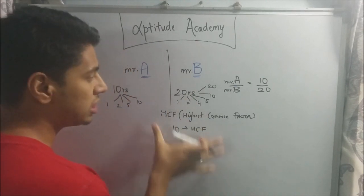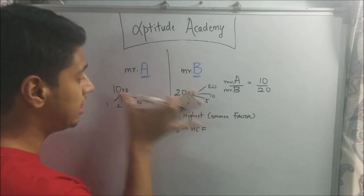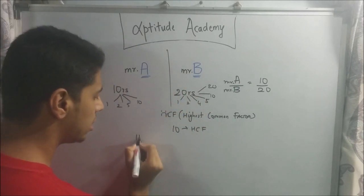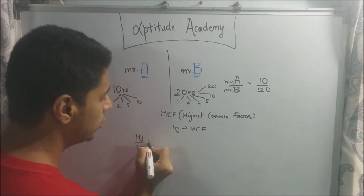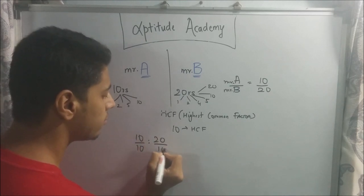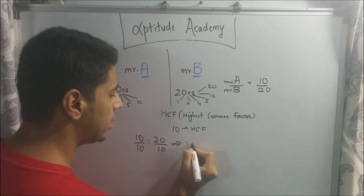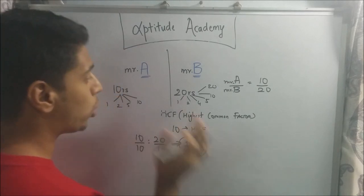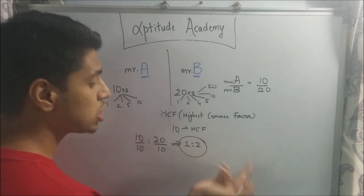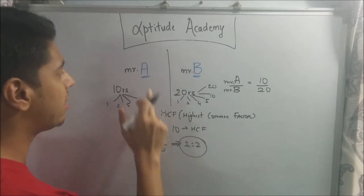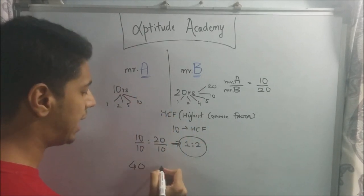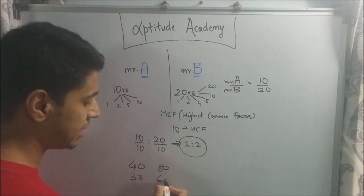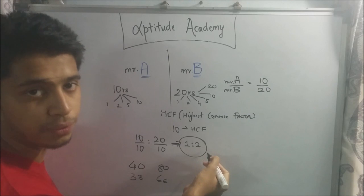So, now to find the most simplified version of this ratio, you need to divide it by the HCF. So, 10 by 10 is to 20 by 10. So, it comes out to be 1 is to 2. So, basically what this ratio is saying: that whatever Mr. A has, Mr. B has twice of that. Now, it doesn't matter if A had 40 rupees and B had 80 rupees, or A had 33 rupees and B had 66 rupees. It would still come down to 1 is to 2.